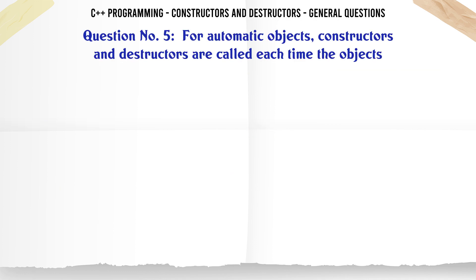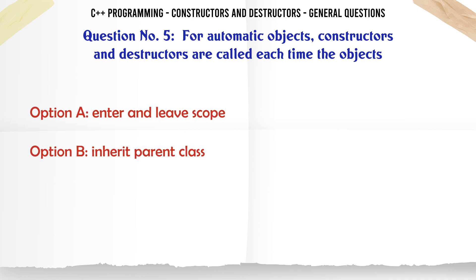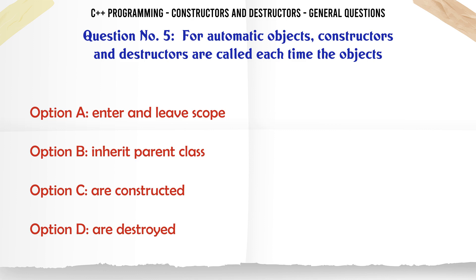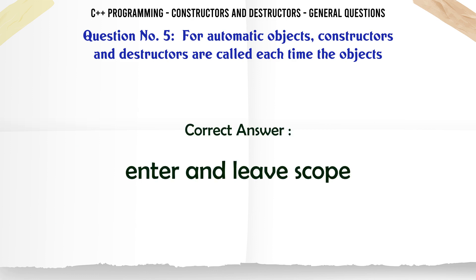For automatic objects, constructors and destructors are called each time the objects: A. Enter and leave scope. B. Inherit parent class. C. Are constructed. D. Are destroyed. The correct answer is Enter and leave scope.